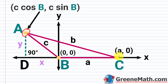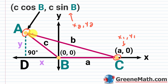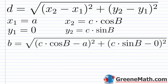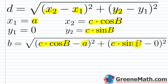Now we plug into the distance formula. We call the point (c·cos B, c·sin B) point 2, and (a, 0) point 1. Instead of d for distance, we use b, since that's the side length we're solving for. So: b = √[(c·cos B − a)² + (c·sin B − 0)²]. This gives us our starting expression to manipulate.